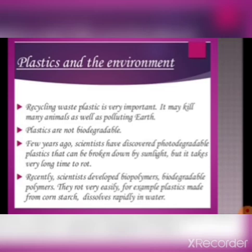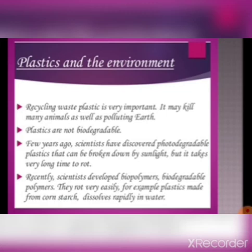A few years ago, scientists discovered photodegradable plastic that can be broken down by sunlight. But it takes a very long time to rot or decompose. Even after inventing photodegradable plastic, it still takes a very long time to decompose. Recently, scientists developed biopolymers, that is biodegradable polymers, which rot very easily. For example, plastics made from corn starch — corn starch is the starch from plants and dissolves rapidly in water. Due to the environmental effect, scientists have started to develop biodegradable polymers.